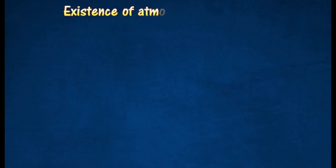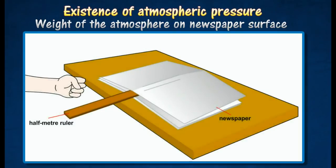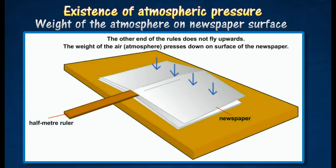Here are a few examples to show the existence of atmospheric pressure. When a single sheet of newspaper is placed on top of the ruler, it becomes hard to move the ruler upwards.